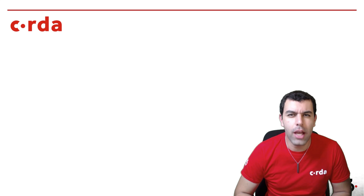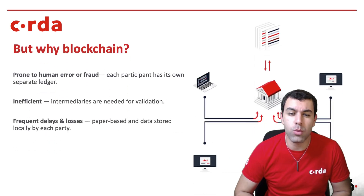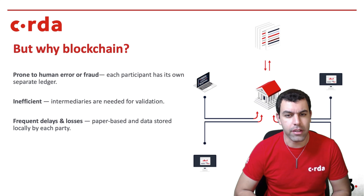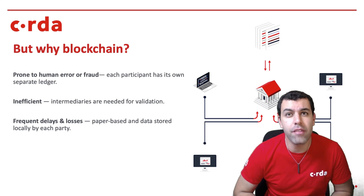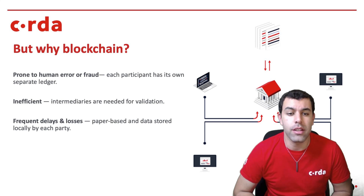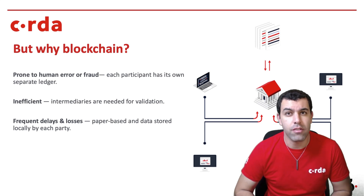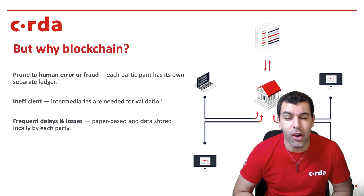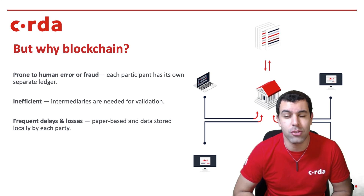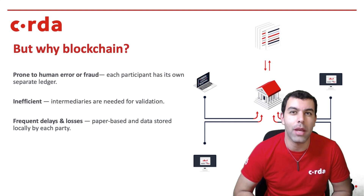But why blockchain? A lot of the systems of the past were prone to human error and fraud, where each participant tended to have their own separate ledger or record of events under dispute. They tended to be inefficient and required intermediaries for validating data between those parties. There were frequent delays and very often losses. In fact, a vast majority of the information we use across industry today still tends to be on pen and paper. So the question really is: can blockchain be the solution?